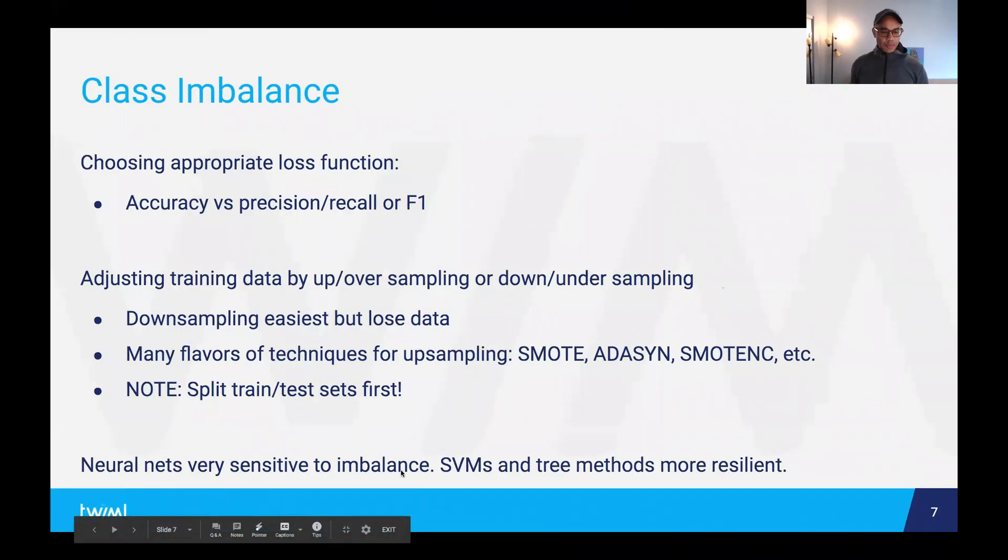The last point on class imbalance here is that they discussed that some methods are more sensitive than others to class imbalance. Neural nets being an example of a model type that is very sensitive to it, whereas SVMs and tree methods can be much more resilient to it. Any thoughts or comments on class imbalance?